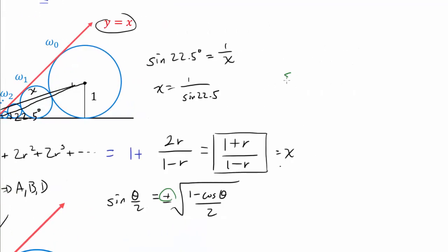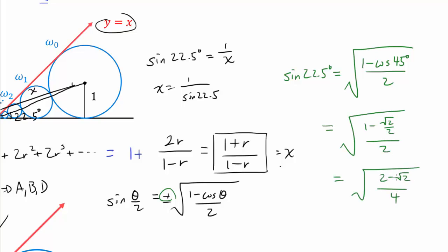So let's bash this out. We know sine of 22.5 is going to be square root of (1 minus cosine of 45) divided by 2. This is square root of (1 minus √2/2) over 2. Or square root of (2 minus √2) over 4.